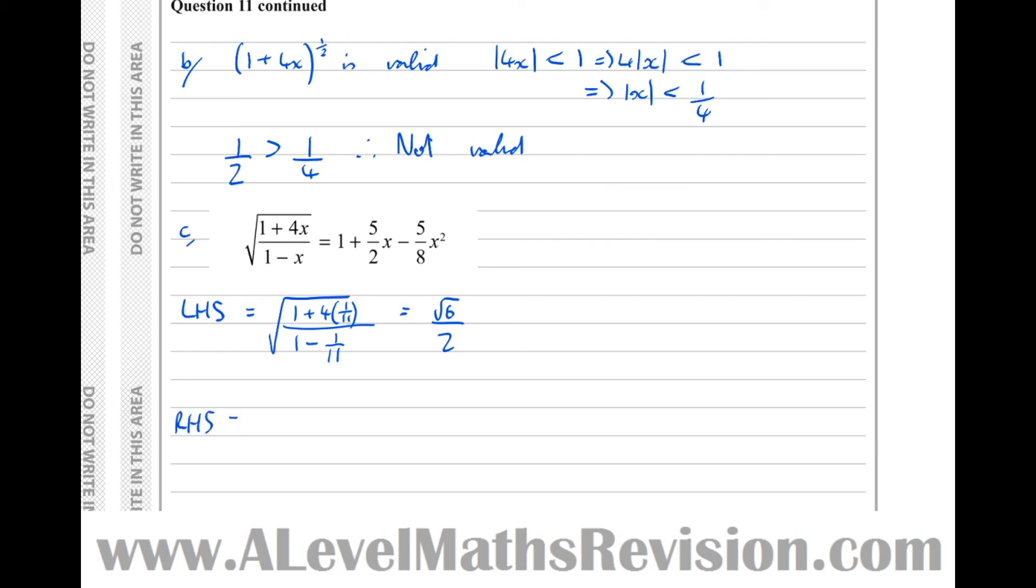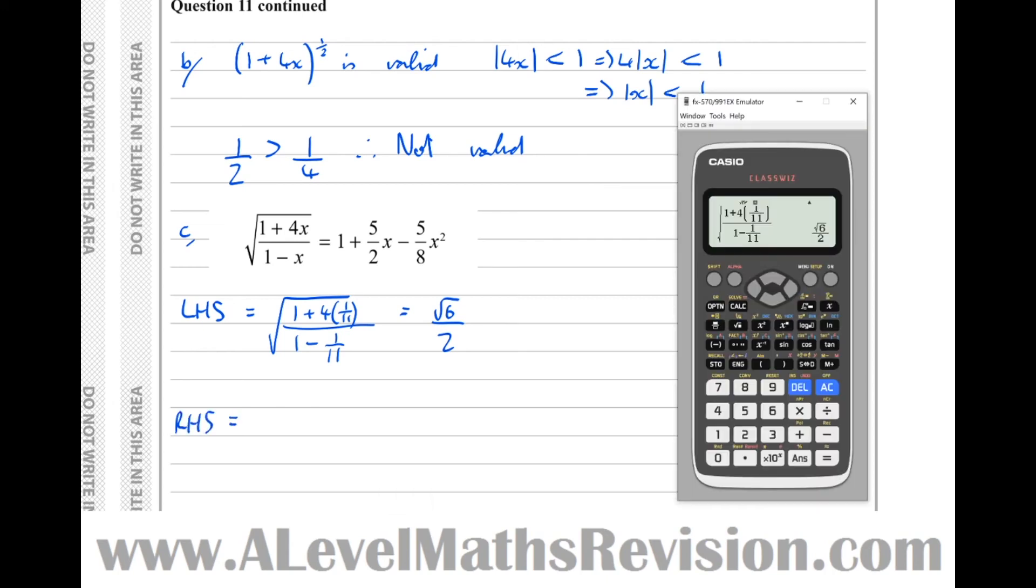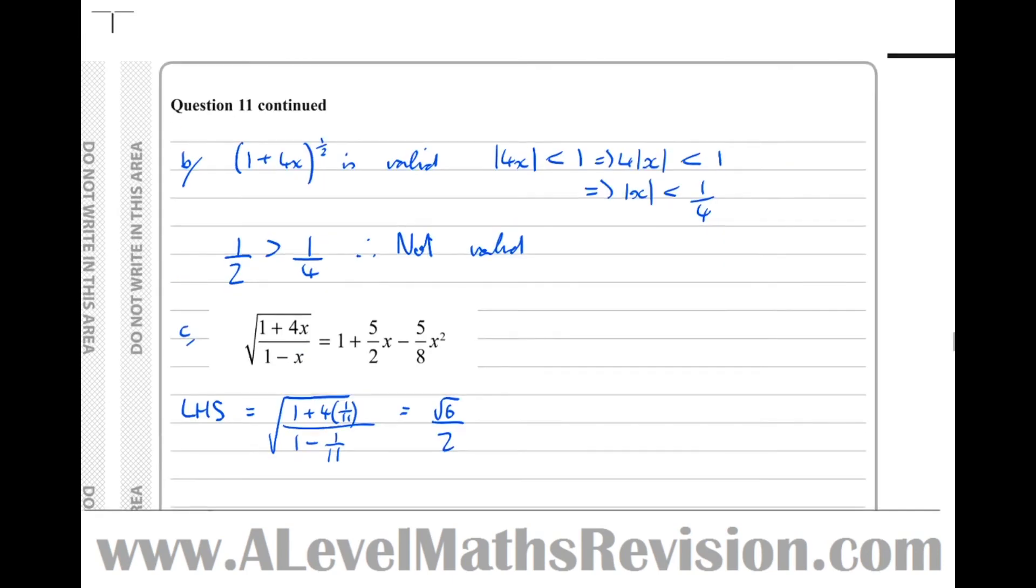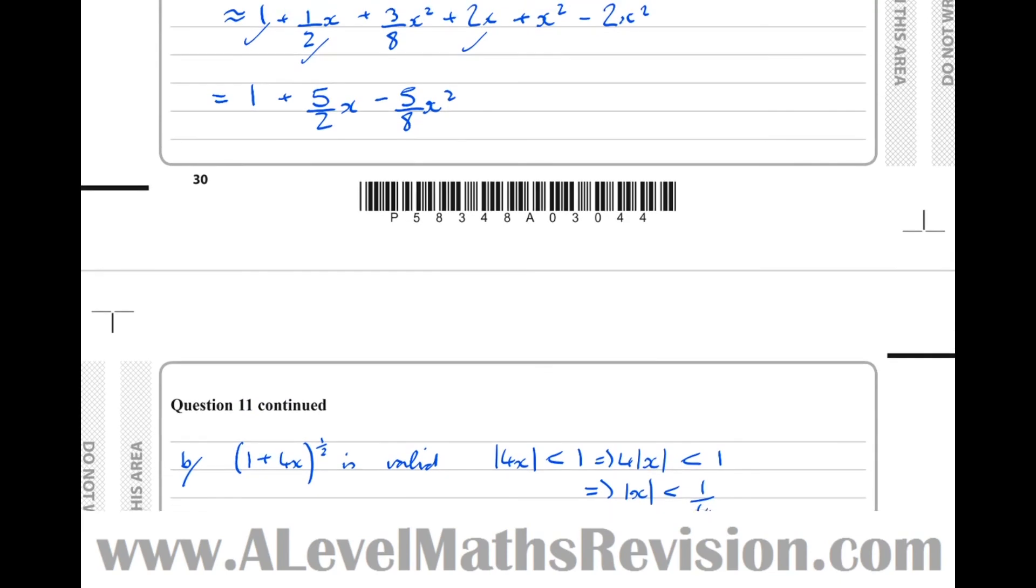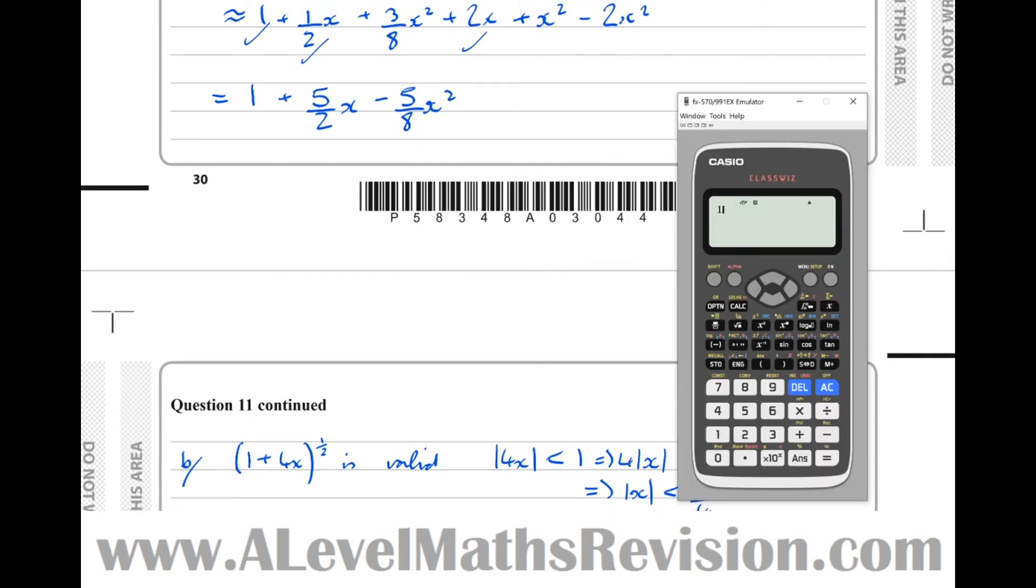So the right hand side equals, so the way I like to sub these into the right hand side, what I'm going to do is type in the calculator 1/11, then press equals. So that's now stored in the answer button. So if I go back up to my expression there, there it is there. My approximation, 1 plus 5 over 2 x, which is stored in the answer button, take 5 eighths x squared. And that just saves a few button pushes.